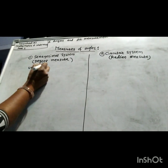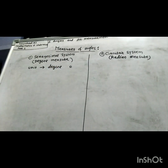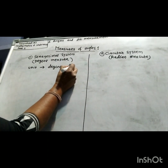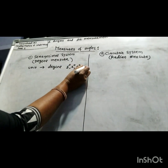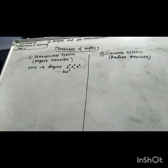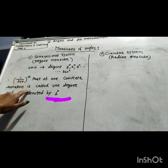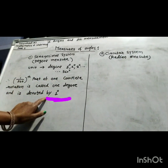In the sexadecimal system, that is the degree system, the unit of measurement of an angle is degree, and it is denoted by the degree symbol. One rotation angle is divided into 360 equal parts; the measure of each part is called 1 degree. So 1/360 of one complete rotation is called 1 degree.